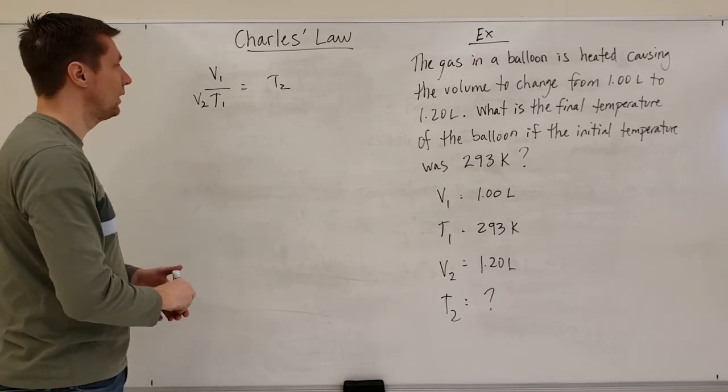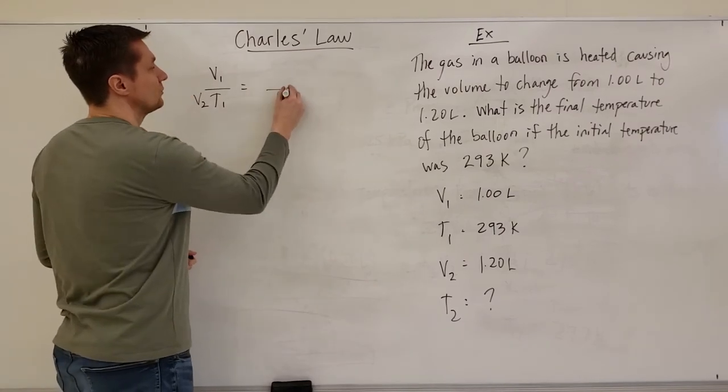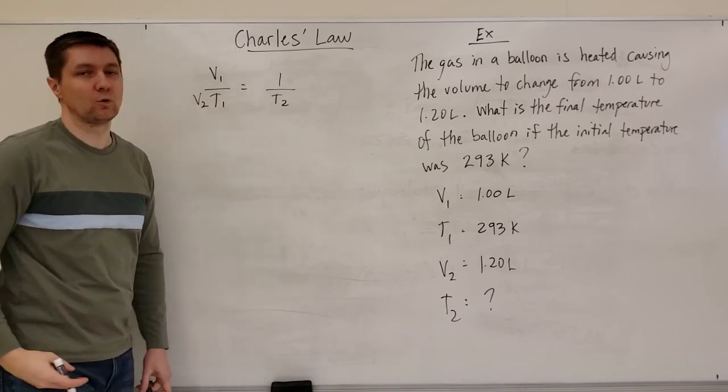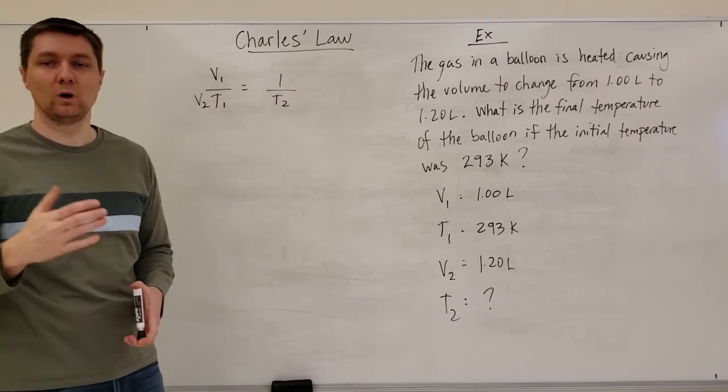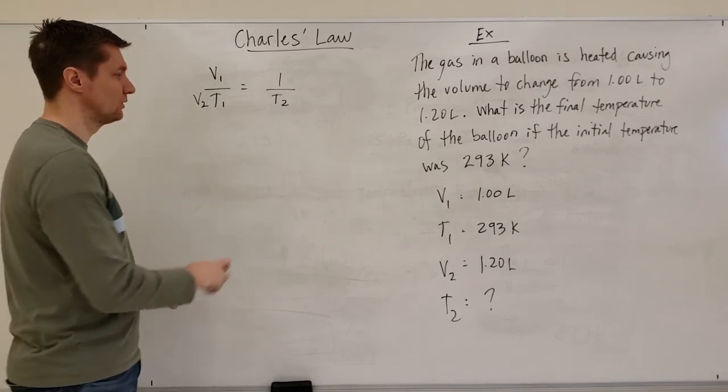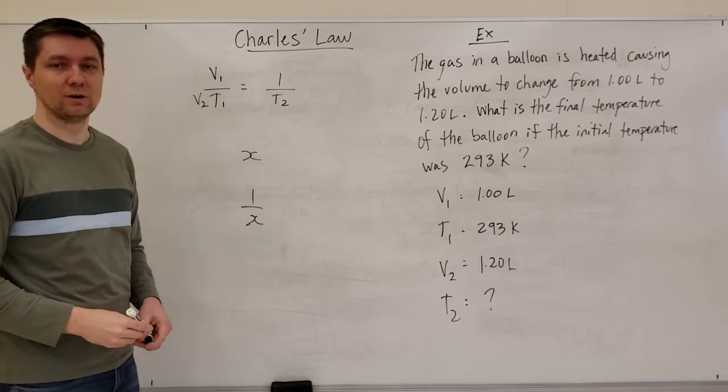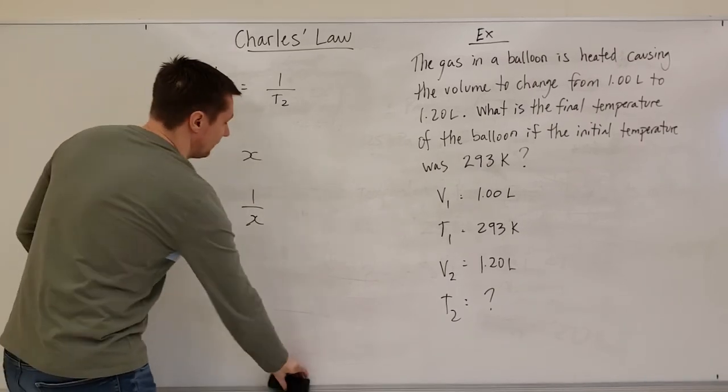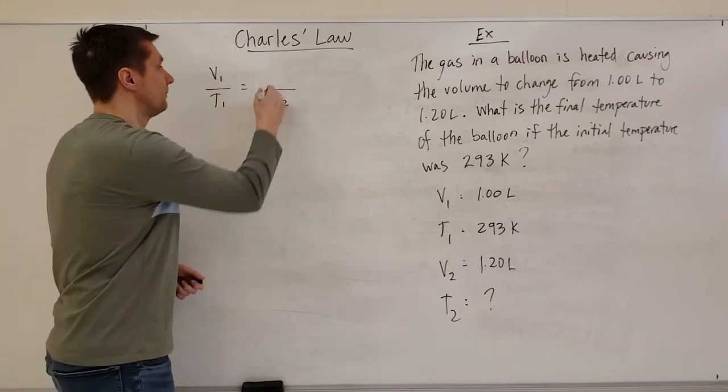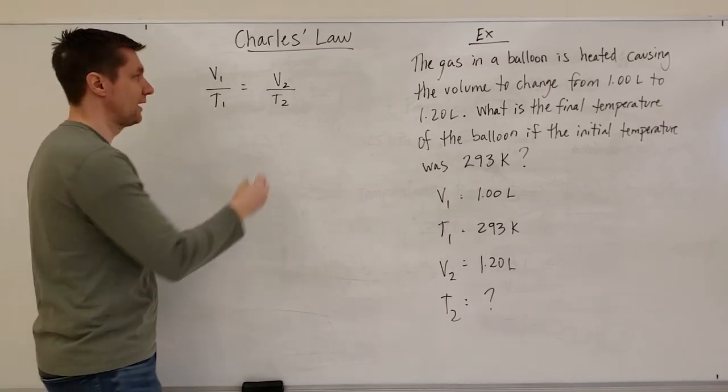The reason why it's not right is because you have to remember that you left T2 on the bottom. So if you took away V2 and put it over here, T2 is on the bottom and so what you solved for was not T2 but you solved for 1 over T2 and that's not the same thing. If someone's asking you to solve for x or solve for 1 over x they're asking you for two different things.